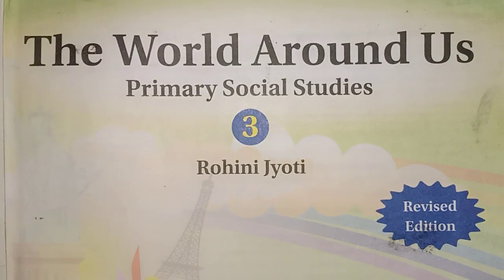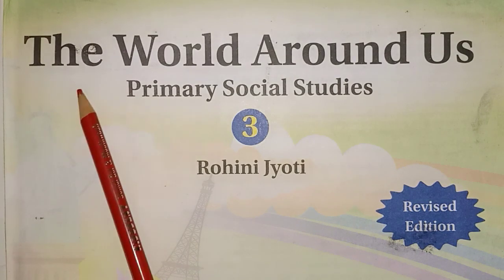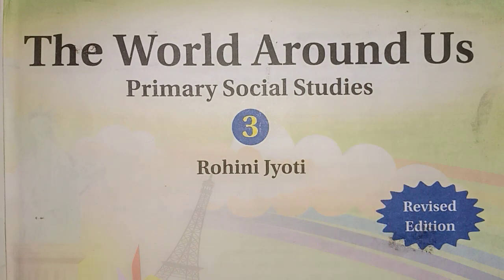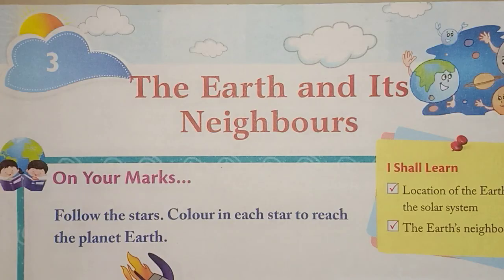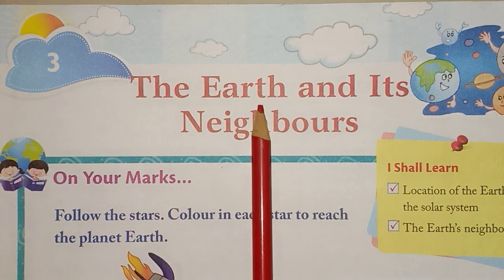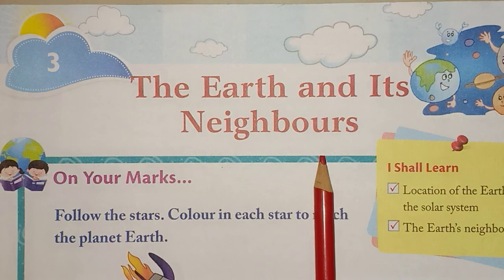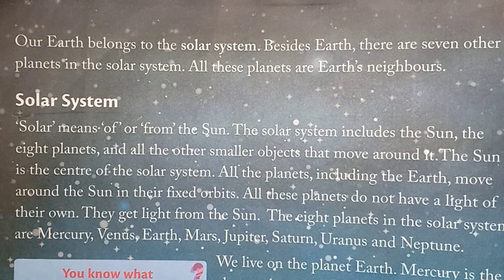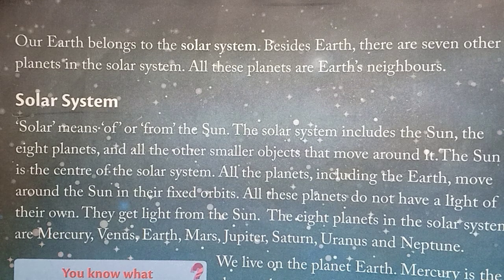Hello students, today we will learn from the world around us — Primary Social Studies, Standard 3, Lesson Number 3: The Earth and Its Neighbors. Just as we have neighbors where we live, the Earth belongs to a family known as the solar system. Along with Earth, there are seven other planets revolving around the Sun.